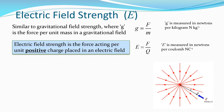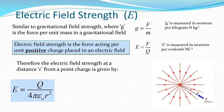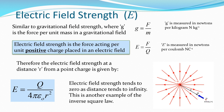If we look at the diagram of a point positive charge, we see the radial field going out from the centre of the positive charge, with a point at infinity. Therefore, the electric field strength at a given distance r from a point charge is given by e equals q over 4 pi epsilon naught r squared. Electric field strength tends to zero as distance tends to infinity, similar to what we saw in gravitational field strength. This is another example of the inverse square law.